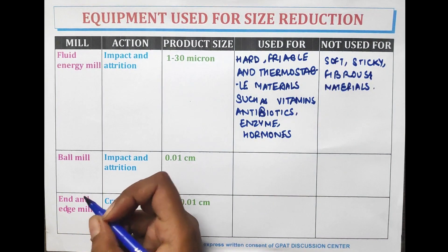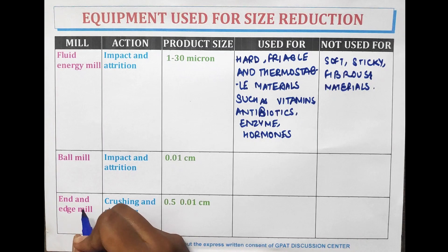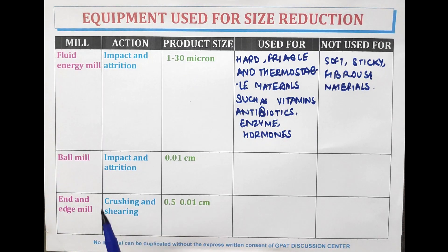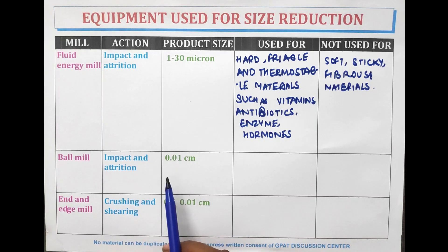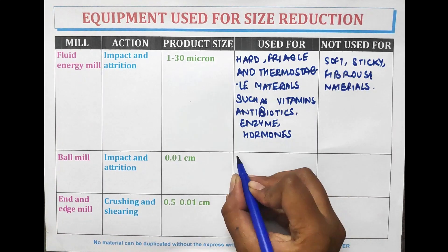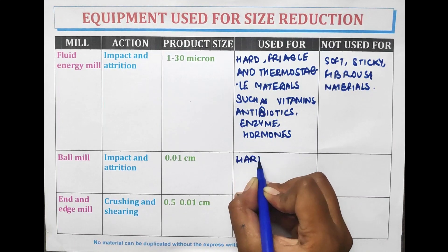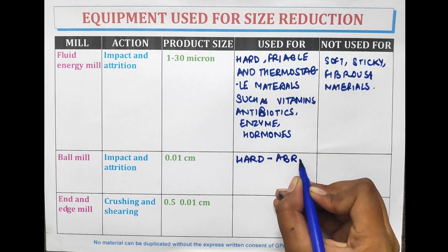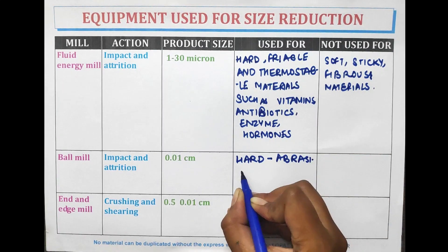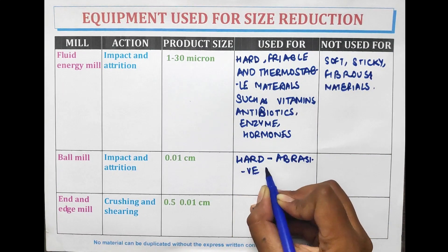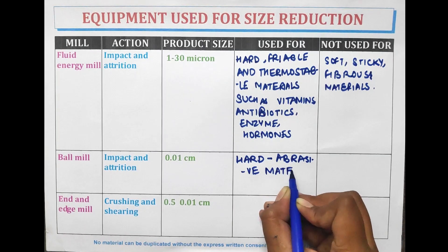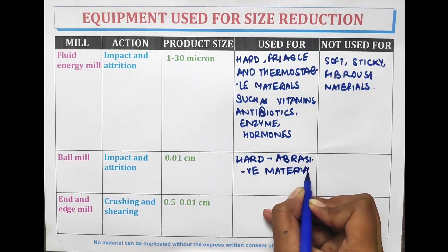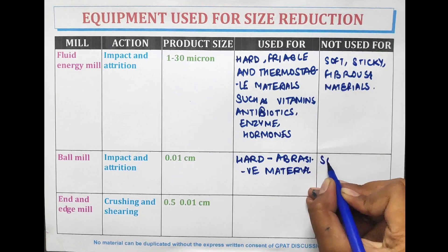The next equipment is the ball mill. The principle is impact and attrition. The product size is 0.01 cm. It is used for hard and abrasive materials.